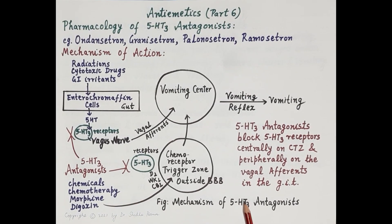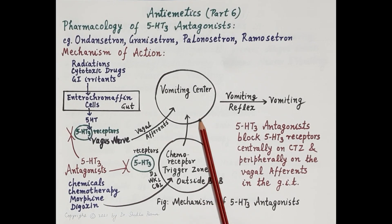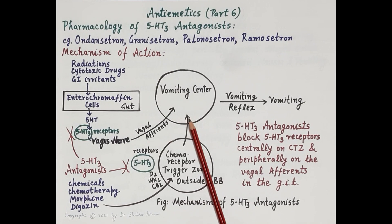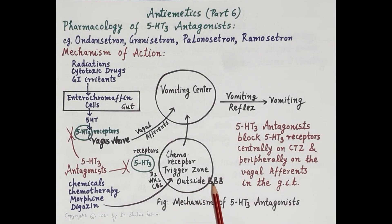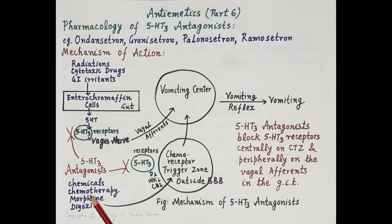Now look at this diagram showing the mechanism of action of 5-hydroxytryptamine 3 receptor antagonists. As we all know, vomiting is induced by stimulation of the vomiting center located in the medulla oblongata, that is the brain stem. Closely associated with the vomiting center is a chemoreceptor trigger zone, also called the area postrema, and it is located outside the blood-brain barrier.